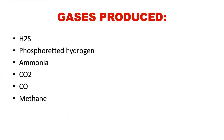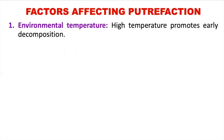Gases produced during putrefaction include hydrogen sulfide, phosphorated hydrogen, ammonia, carbon dioxide, carbon monoxide, and methane. All these gases are produced in the process of putrefaction.